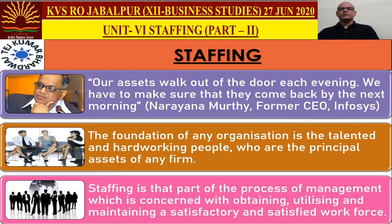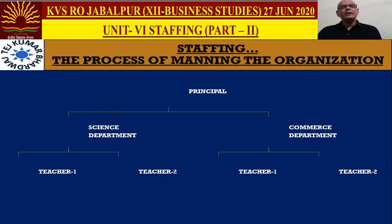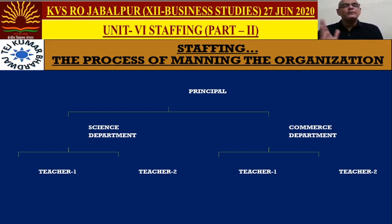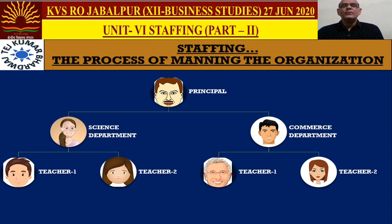Staffing is that part of the process of management which is concerned with obtaining, utilizing, and maintaining a satisfactory and satisfied workforce. In organizing, we create the structure of the organization. In staffing, we appoint people to the posts developed during organizing — we fill the vacant posts created during the process of organizing. Staffing is the process of manning the organization.